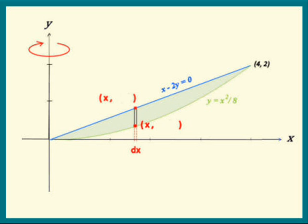Next we fill in the y-coordinates of those two points. The point on the line, the y-coordinate is equal to x over 2. Move down to the point on the parabola. The y-coordinate there is x squared over 8.